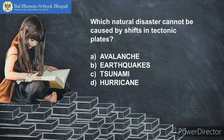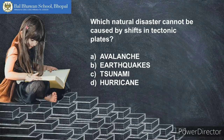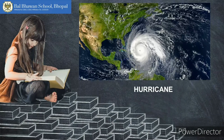Which natural disaster cannot be caused by shifts in tectonic plates? Is it avalanches, earthquakes, tsunami, or hurricane? It's an easy one! And the answer is hurricane. While earthquakes, volcanic activity, and avalanches can be caused by shifts in tectonic plates, hurricanes originate over the ocean and are not affected by them.